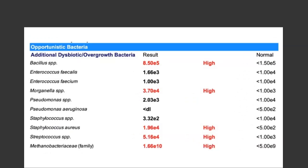This is where we discuss how dysbiosis patterns may be related to mast cell activation. In the opportunistic bacteria section: Bacillus is elevated, Morganella is high, and Staphylococcus aureus is detected at a high level — specifically at E4, almost 100-fold higher than the cutoff level. Streptococcus is also elevated, which we commonly see with low stomach acid. The methane producers are also elevated.